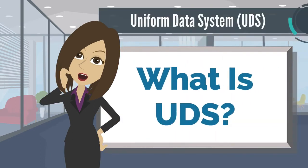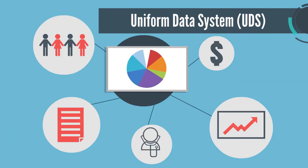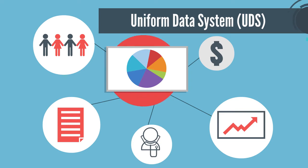So what is UDS? The UDS is a standardized set of data reported by health centers each year. It contains a core set of information, including patient demographics, services provided, clinical processes and outcomes, staffing, patients' use of services, costs, and revenues appropriate for documenting the operation and performance of health centers.